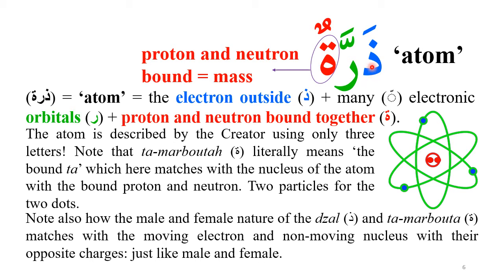The Da means inside and Zahaba means to go out — the electron is on the outside. Interestingly, Za is a masculine letter — for example, Zakar means male — while the Ta Marbuta has feminine meaning. So they are opposite in character, reflecting how the proton and neutron have positive charge while the electron has negative charge. This is a picture of the atom, described using just three letters.